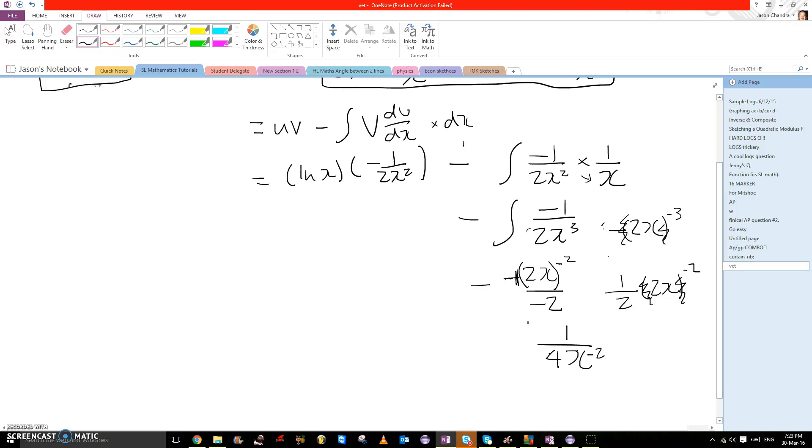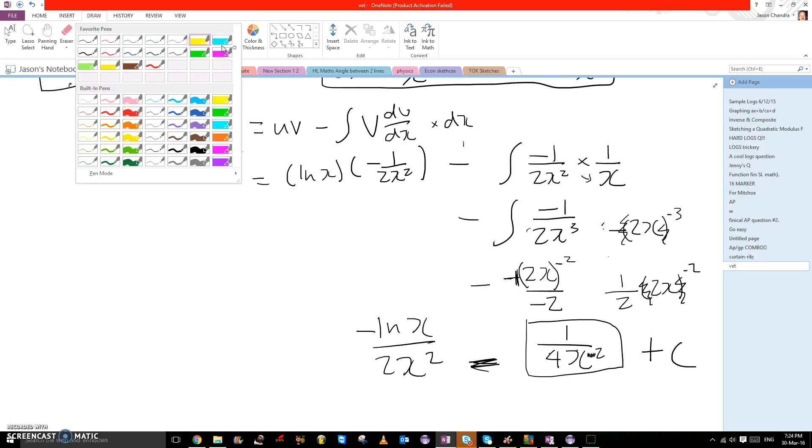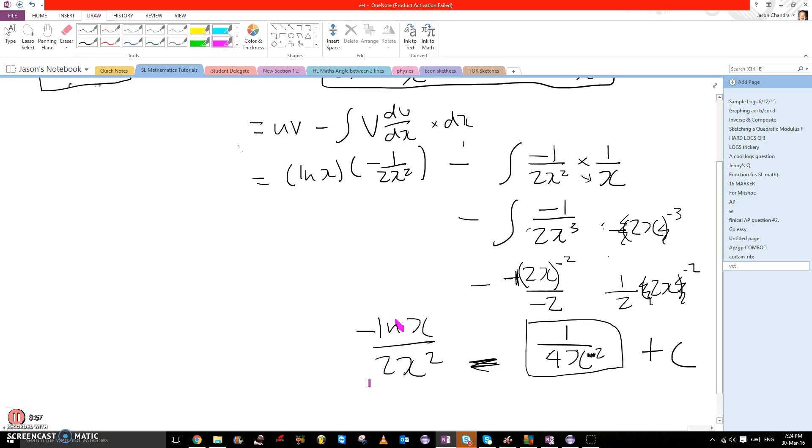This would be the right-hand side of the integral. So minus ln x over 2x squared plus the constant c. Ignore that minus because it's already 1 over, so we can get rid of it. This should be your final answer.